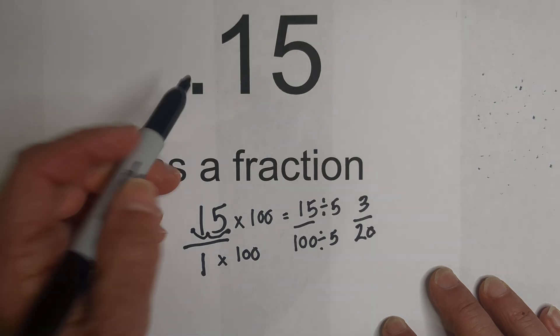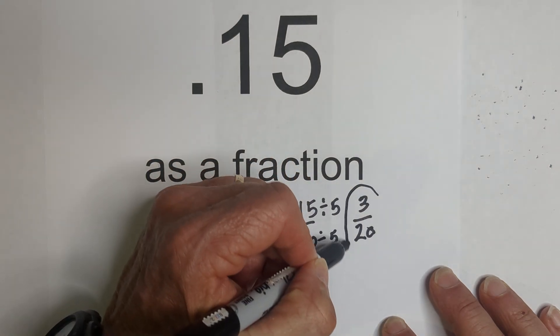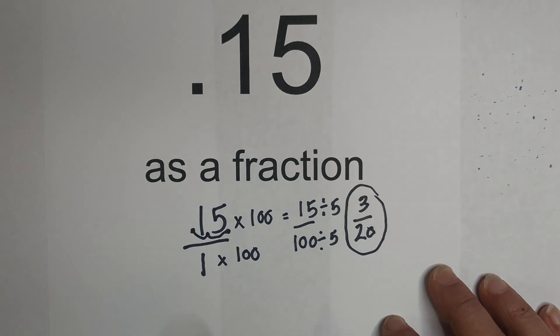So there we go, 15 hundredths as a fraction is 3 twentieths. Thanks for watching and remember, kindness multiplies kindness. Be kind to someone today.